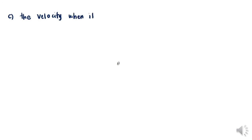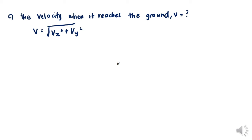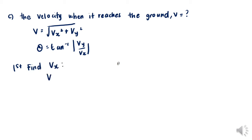For part c, we need to find the velocity when the object reaches the ground. Velocity has x and y components, so we apply the Pythagorean theorem for magnitude and arctan(vy / vx) for direction. First, vx equals ux equals 9.9 meters per second.